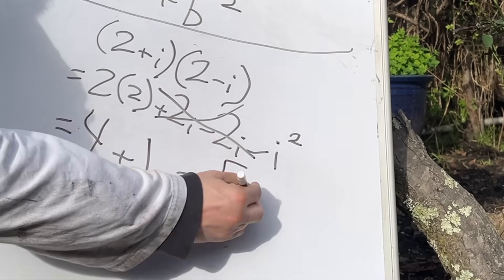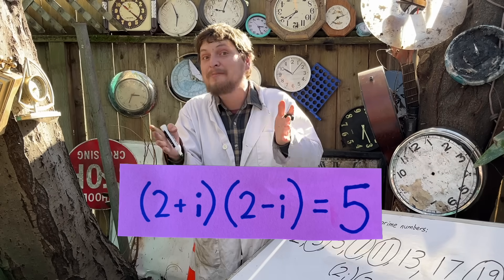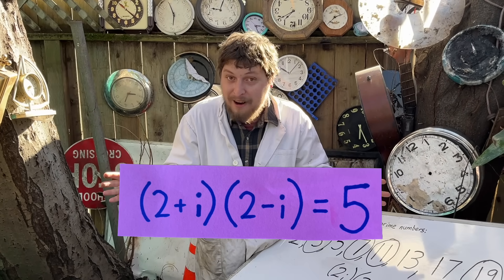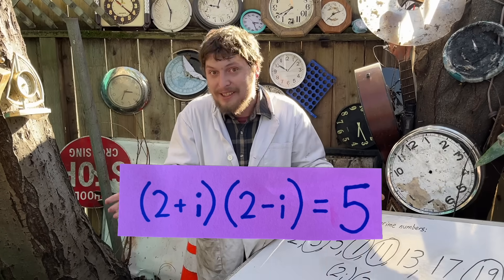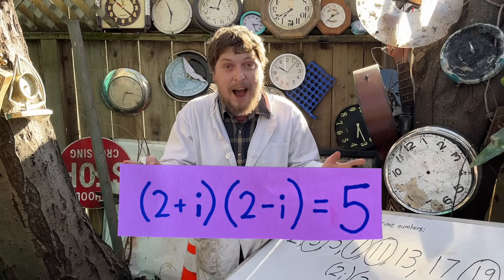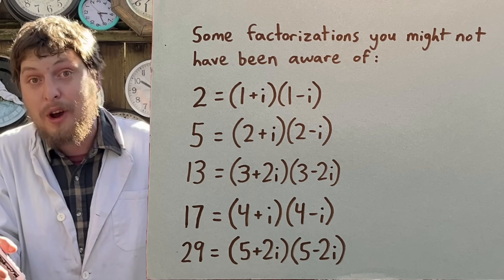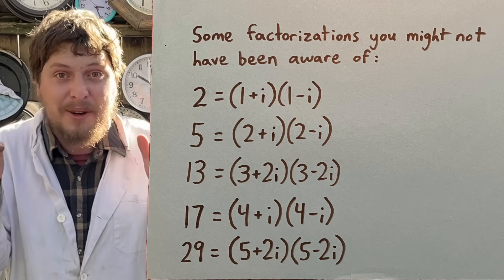that gets me 5. And that is one possible factor pair that doesn't involve any units that multiplies to 5, making 5 also not a Gaussian prime.